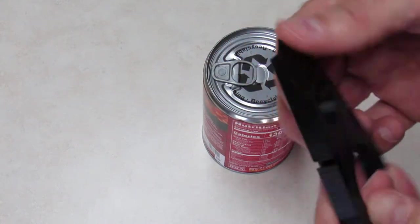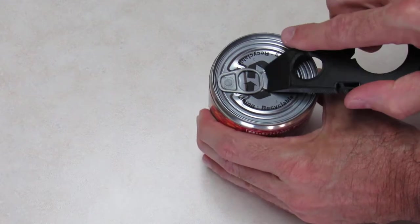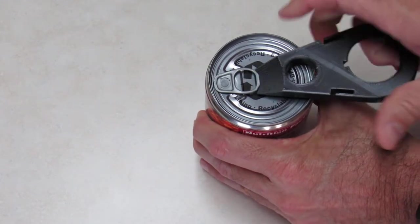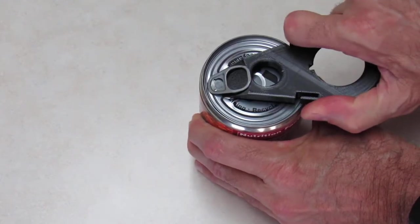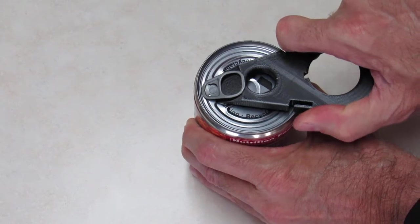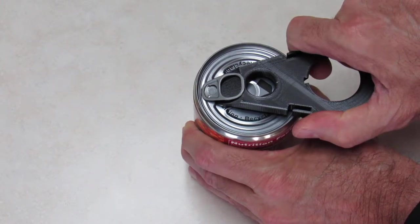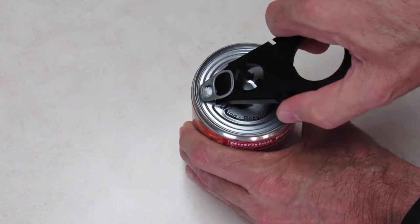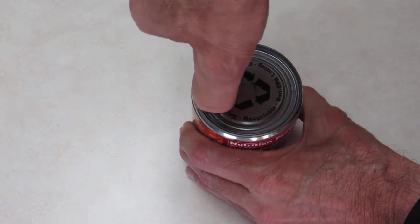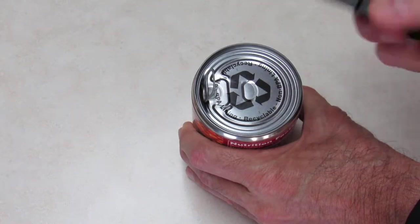You push that underneath the pop-top all the way to where the pop-top meets the can. And you tip it up just to separate the pop-top from the can.